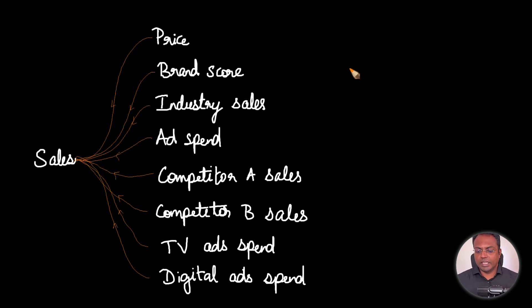In order to understand this explicitly, let's see this with an example. We are trying to predict sales. The sales is dependent on various other features: the price, brand score, industry sales, ad spend, competitor A sales, competitor B sales, TV spend, and digital ad spend.